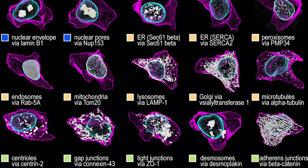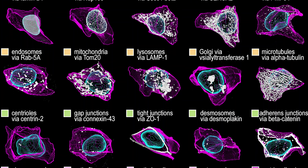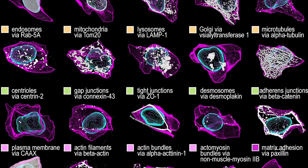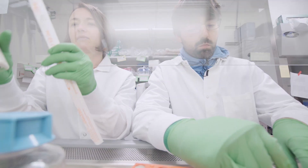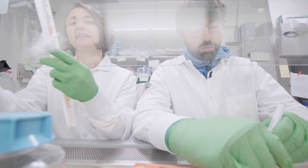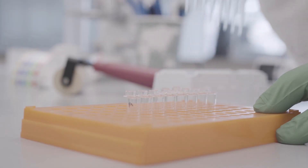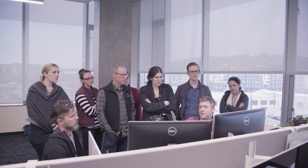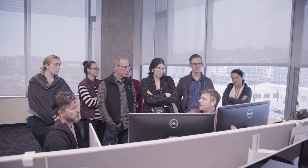The catalog is a complete list of all the cell lines we've generated, as well as those in progress, and includes quality control data, gene editing methods, SOPs for the correct use of our cells, links to resources like an online support forum, and more.